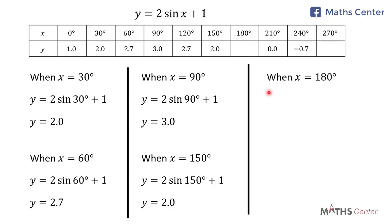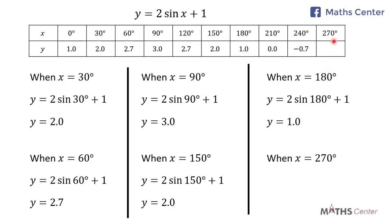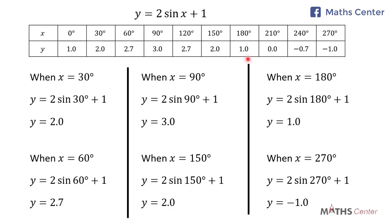When x is equal to 180 degrees, y is equal to 2 sin 180 degrees plus 1, which gives us 1.0. When x is equal to 270 degrees, y is equal to 2 sin 270 degrees plus 1, which gives us negative 1.0. We have now completed the table for the values of x and y.